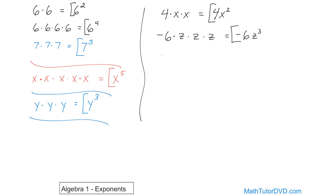What if we have y times y times negative 5? In this case, y times y is y squared. The negative 5 is also being multiplied, so you could write it as y squared times negative 5, with parentheses — because if you take the parentheses away, it looks like y squared minus 5, which is definitely not what it is. It's y squared multiplied by negative 5. But in algebra, we always write the numbers first, even if they're negative, and the exponents second — you always see it written as negative 5y squared. You never leave the number last; you always write the number first.